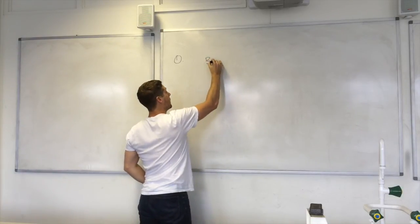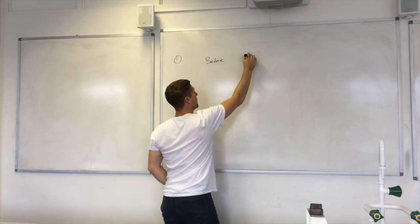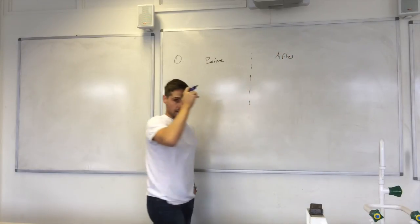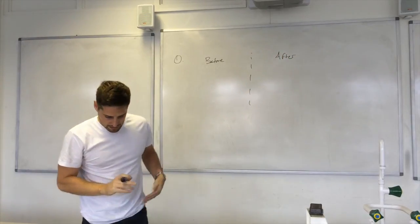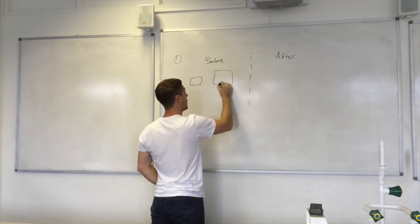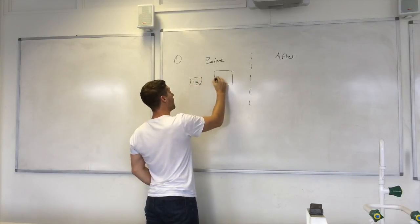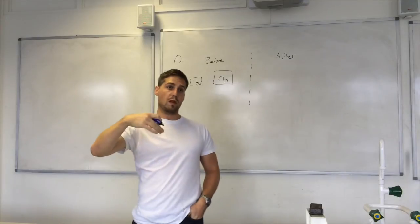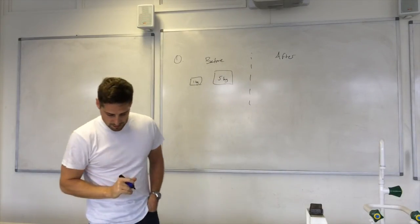Okay, so we've got before here, after here. We're going to have two objects. We're going to start with a numerical example and then we'll try and generalise it a little bit more as we go on.